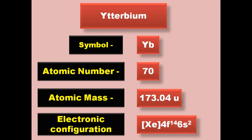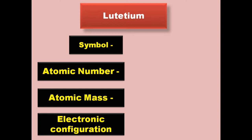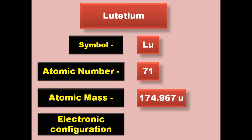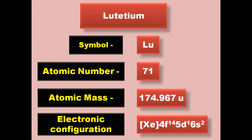Lutetium has symbol Lu, atomic number 71, atomic mass 174.967, electronic configuration [Xe] 4f14 5d1 6s2. Lutetium is a lanthanide and exists in solid form at room temperature.